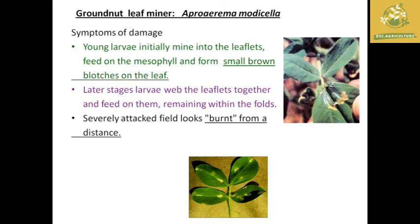The next one is ground leaf miner, with the scientific name Aproaerema modicella. The symptom of damage is small brown blotching on the leaves, indicating a leaf miner is present in the soybean. In later stages, the leaf folds together and the larvae feed within the folds. In severe infestation, a burnt symptom can be seen in the soybean field from a distance, which is the characteristic damage for identification of ground leaf miner.